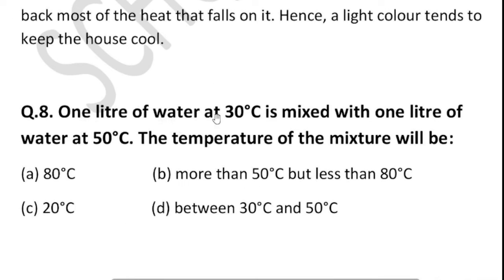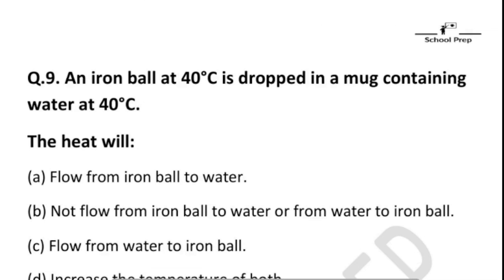The next question: one litre of water at 30 degrees Celsius is mixed with one litre of water at 50 degrees Celsius. The temperature of the mixture will be between 30 and 50 degrees Celsius. The correct answer is D.